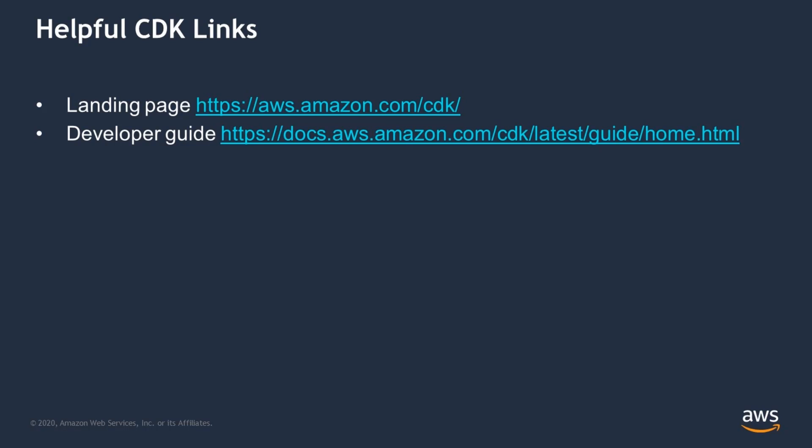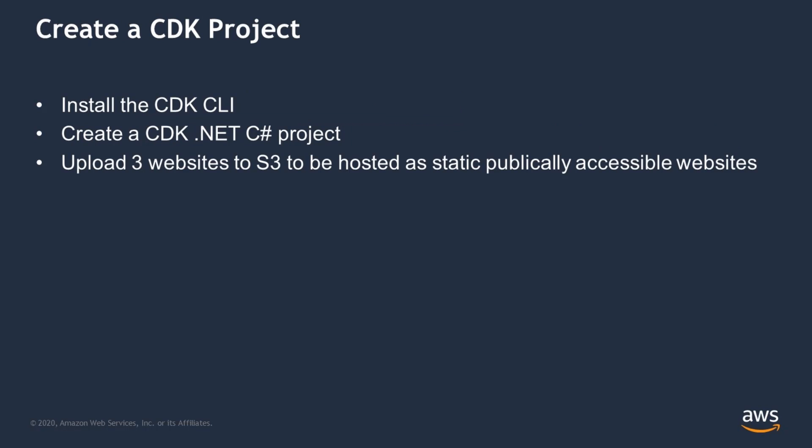To go deeper into this area, a few good places to start would be the AWS Cloud Development Kit landing page and the AWS Cloud Development Kit developer guide as linked in this slide. For the purposes of this video, I will show you how to create a new CDK project using the CDK CLI. We will use that project to write code which will upload static web pages onto AWS S3 to be hosted as publicly accessible websites using Amazon CDK NuGet packages. Let's get started.